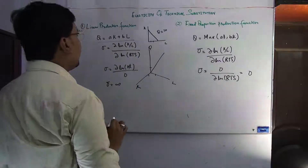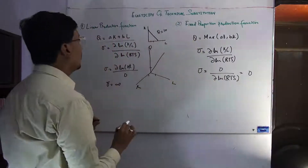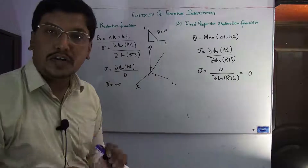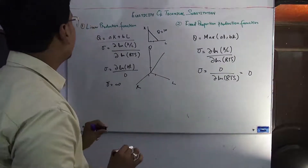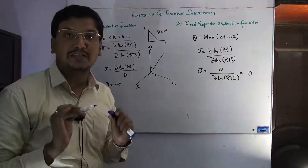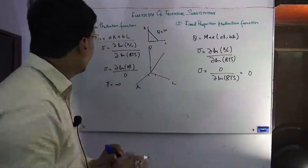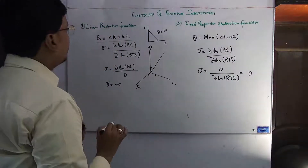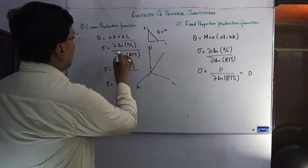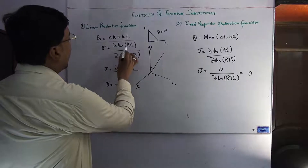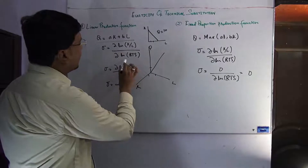We have calculated in the previous lecture how we can find out the elasticity of technical substitution. This is the formula we can use. We observe the components of the formula: it shows the capital-labor ratio log and the log of the RTS.